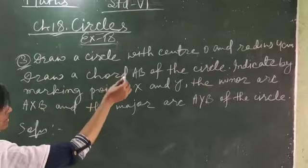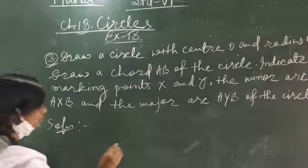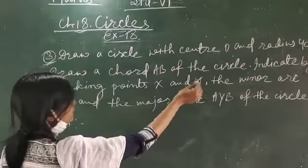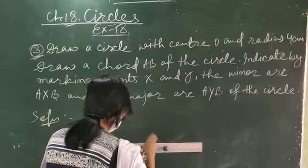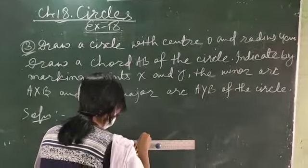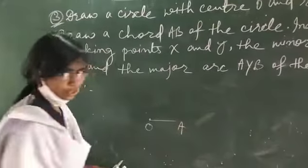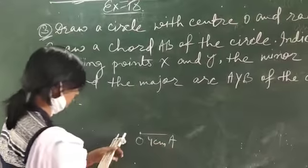Draw a circle with center O and radius 4 cm. You have to draw a circle with center O and radius 4 cm. Draw a line segment of 4 cm, and then draw a circle of this radius, 4 cm radius.